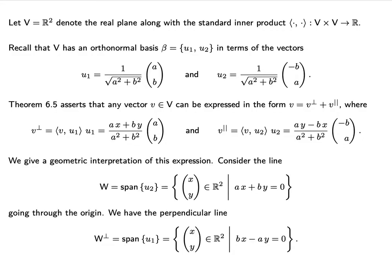There is a rather simple geometric interpretation of all of this. To explain what it is, let's let w be the line spanned by the vector u1. This is just the line ax plus by equals zero. We can also consider the perpendicular line, w_perp — that is the line w rotated by 90 degrees. This is just the set of points xy such that bx minus ay equals zero.